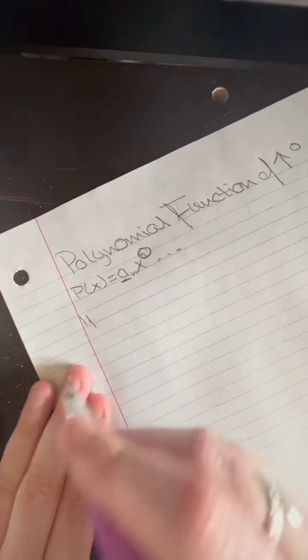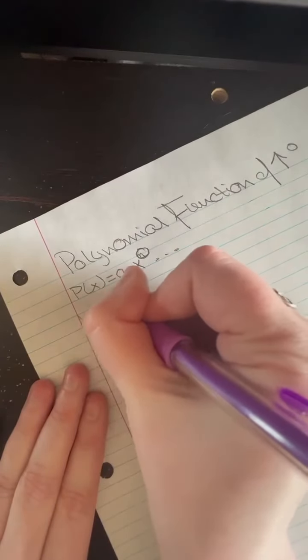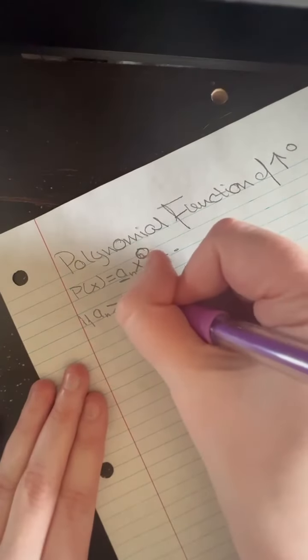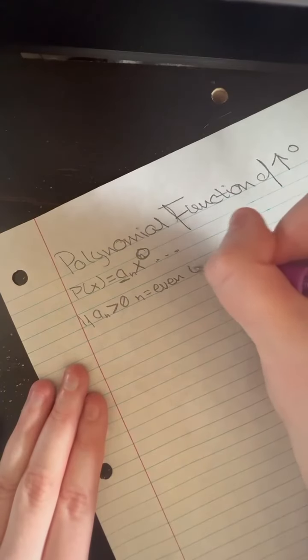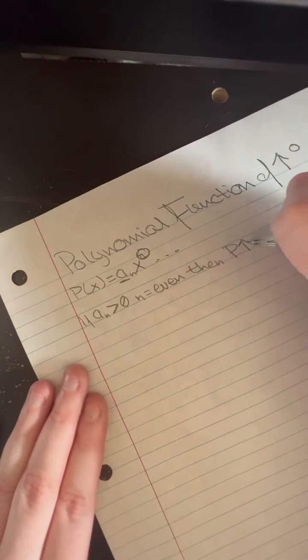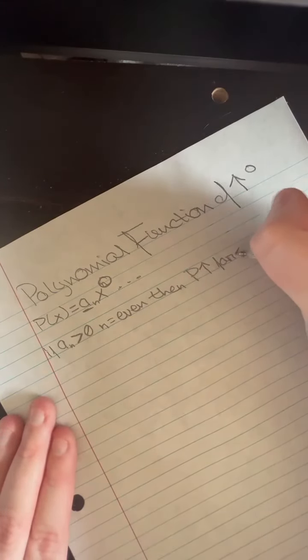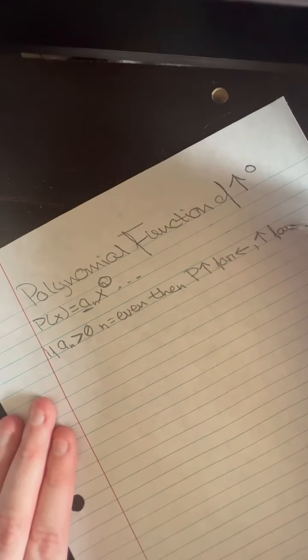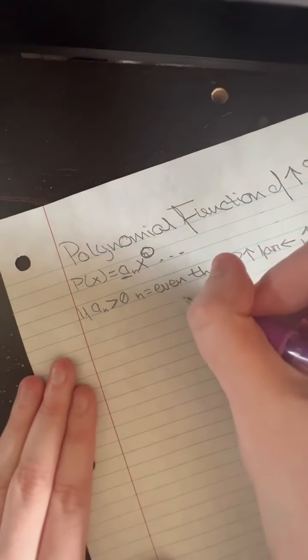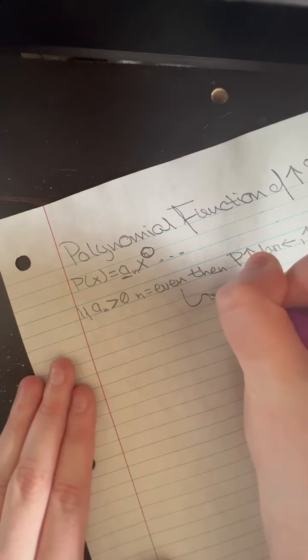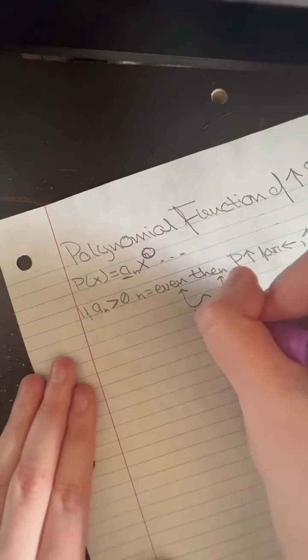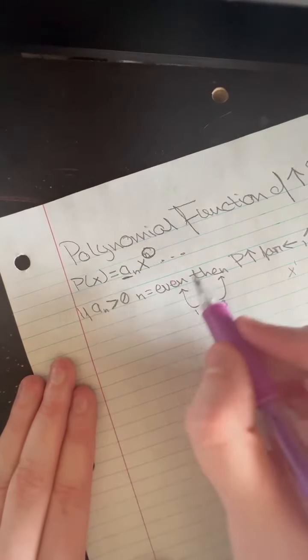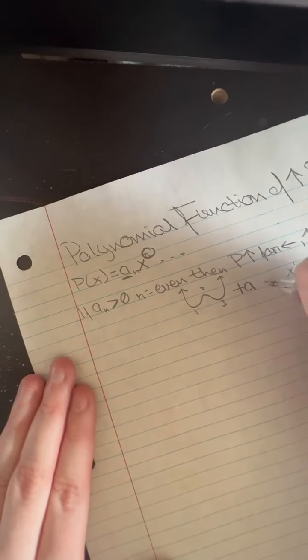So if a is greater than 0 and n, this exponent n, is an even number, then p will go up to the far left and up to the far right. That will typically look like this. We already have an x exponent of 1, so we have 1, 2, 3 turns. Our exponent n here is even, so it would be a positive a with an x exponent of 4.